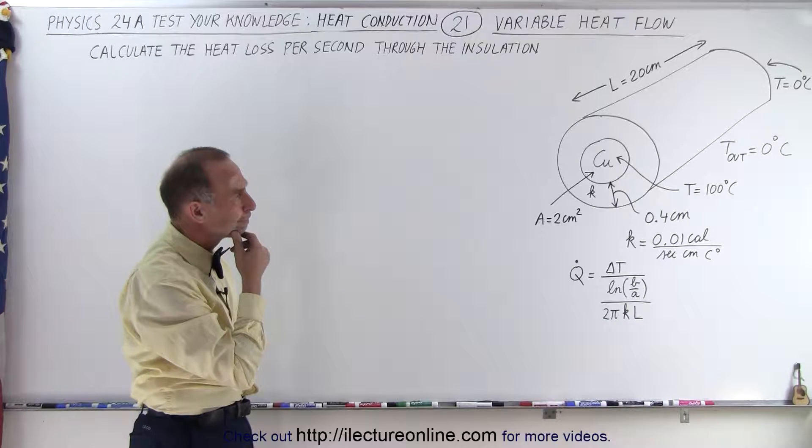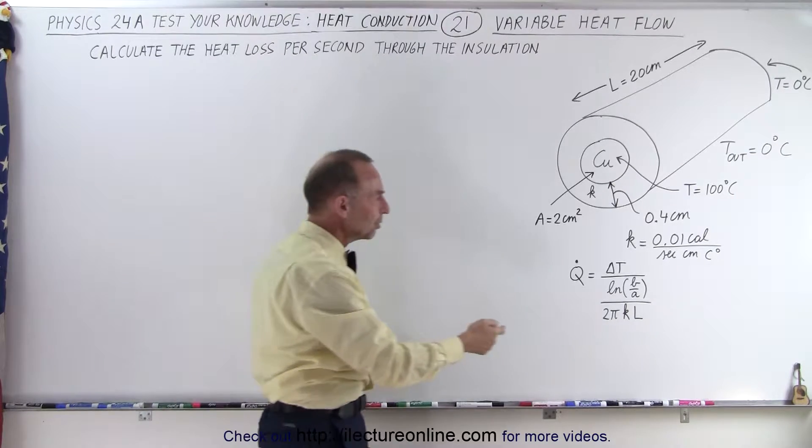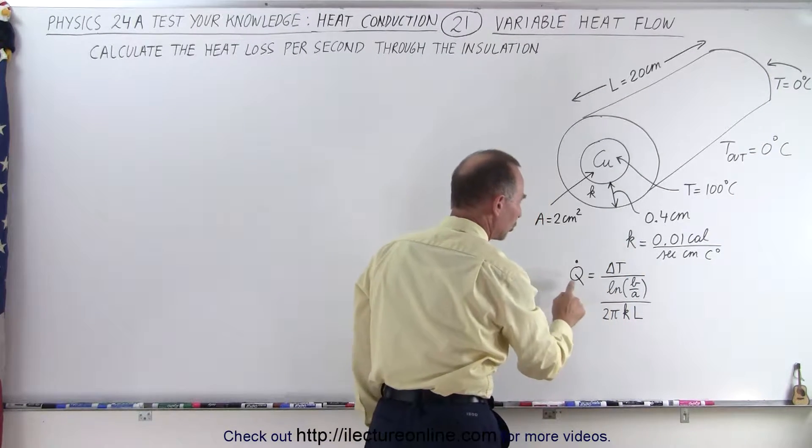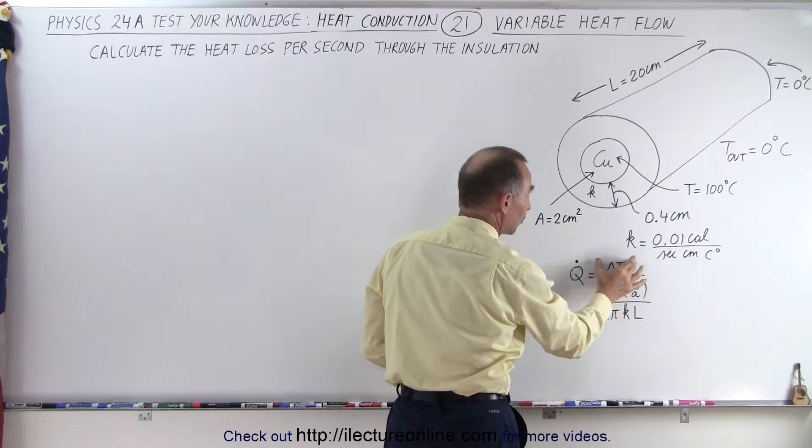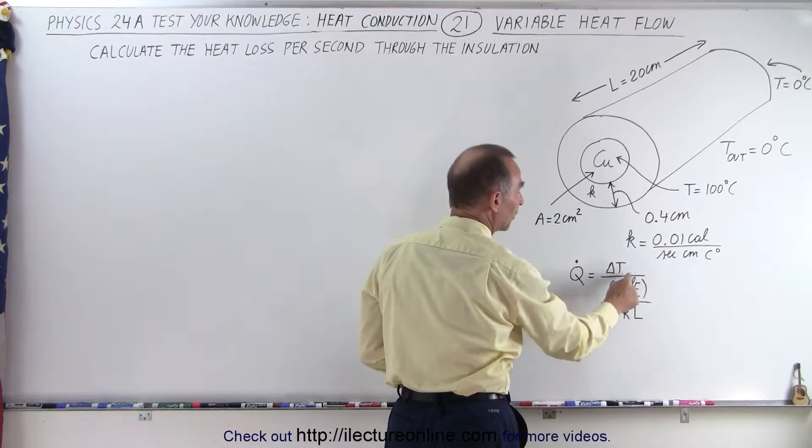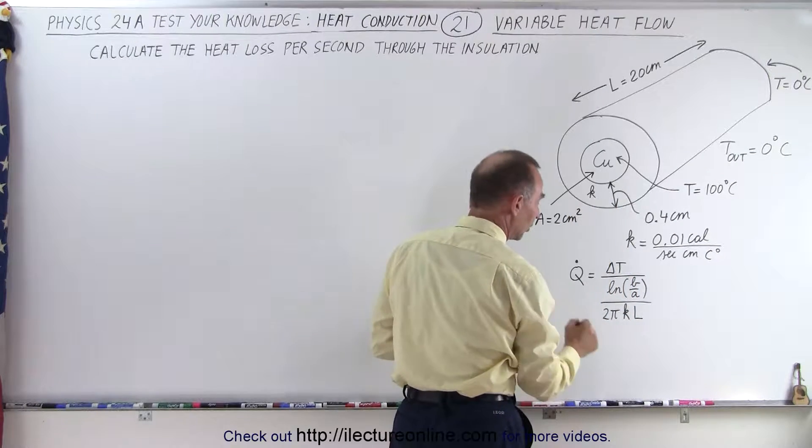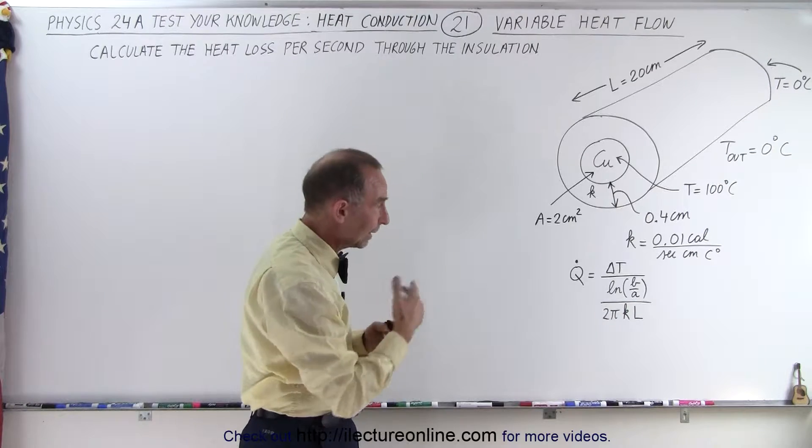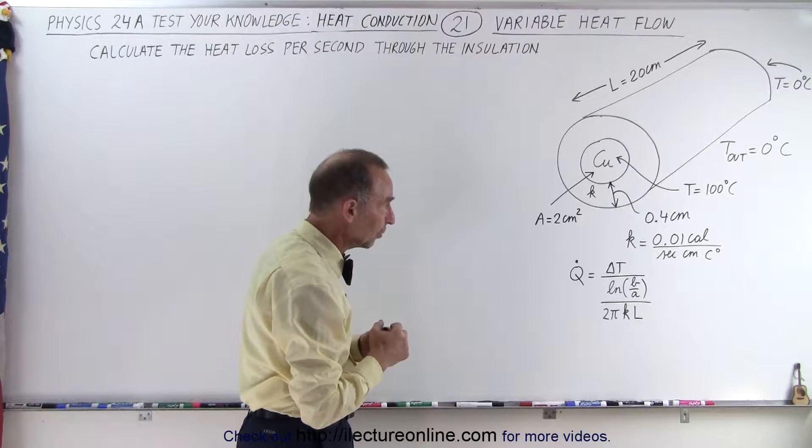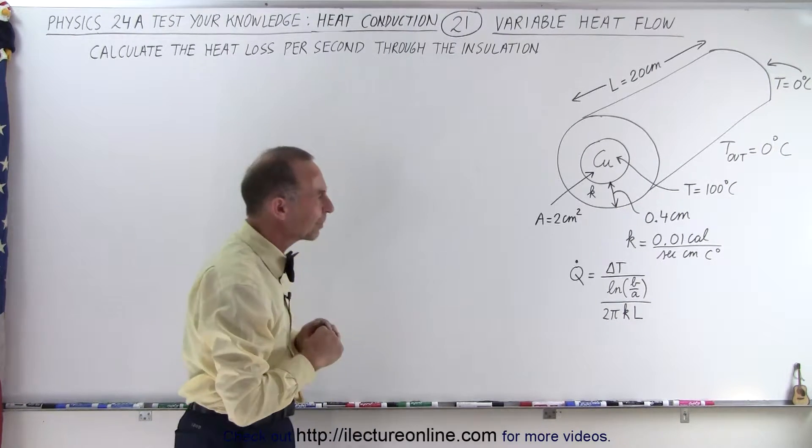How do we do that? Well, starting with the original equation right here where Q̇, considering that it's constant, is equal to the difference in the temperature divided by the natural log of B over A through the insulating material, divide that by 2πKL, L being the length of that and K of course being the constant, the connectivity constant of the insulating material.